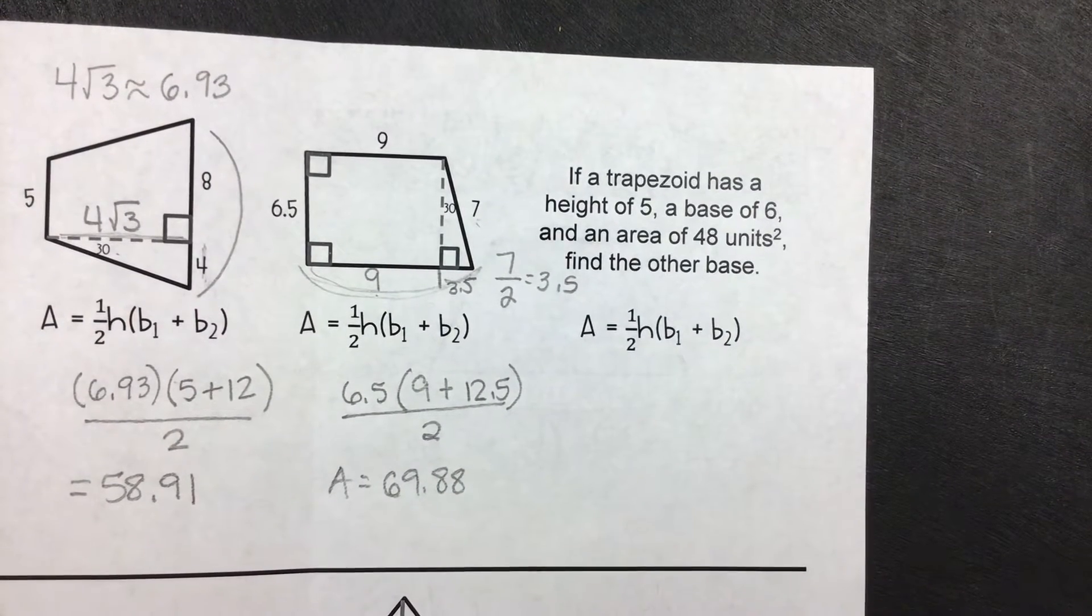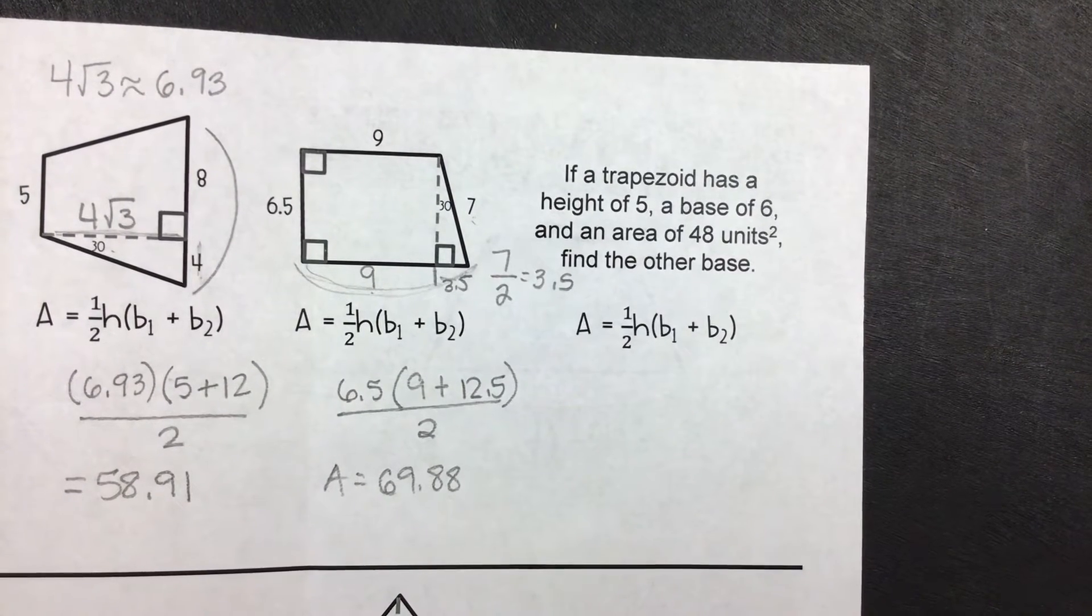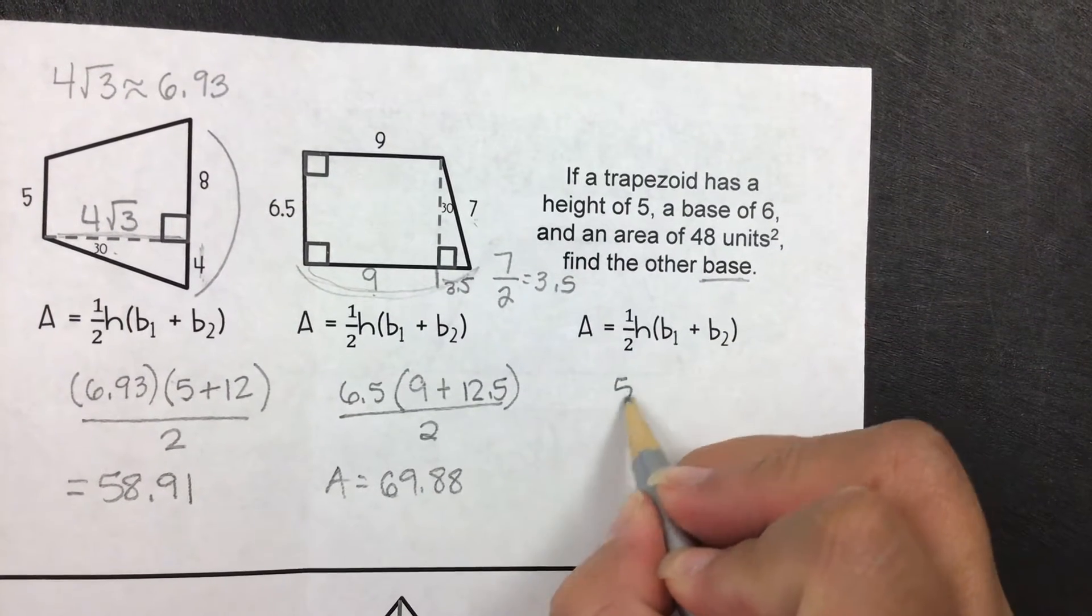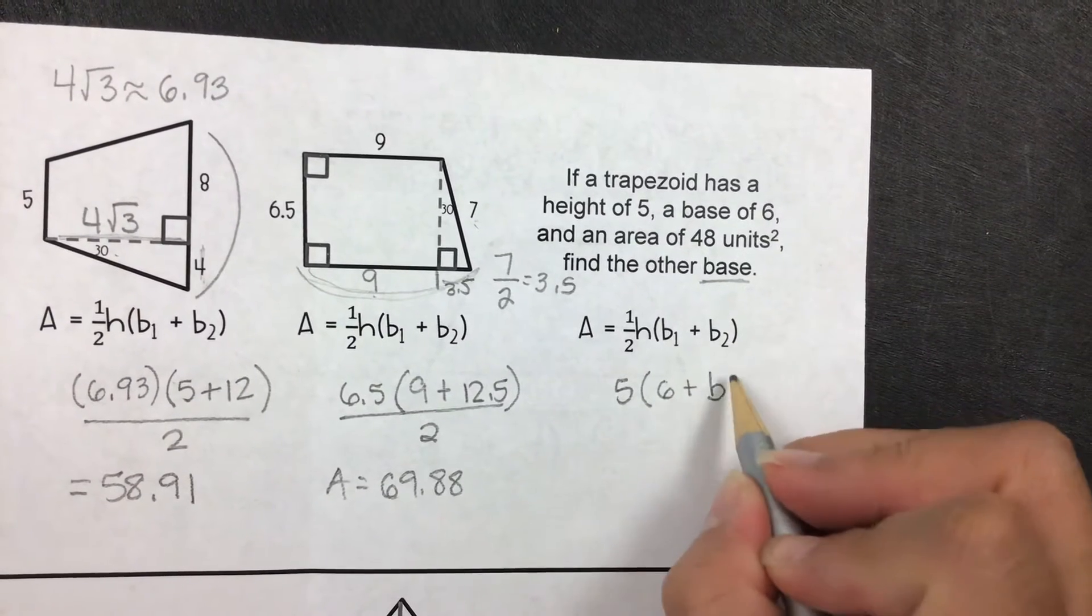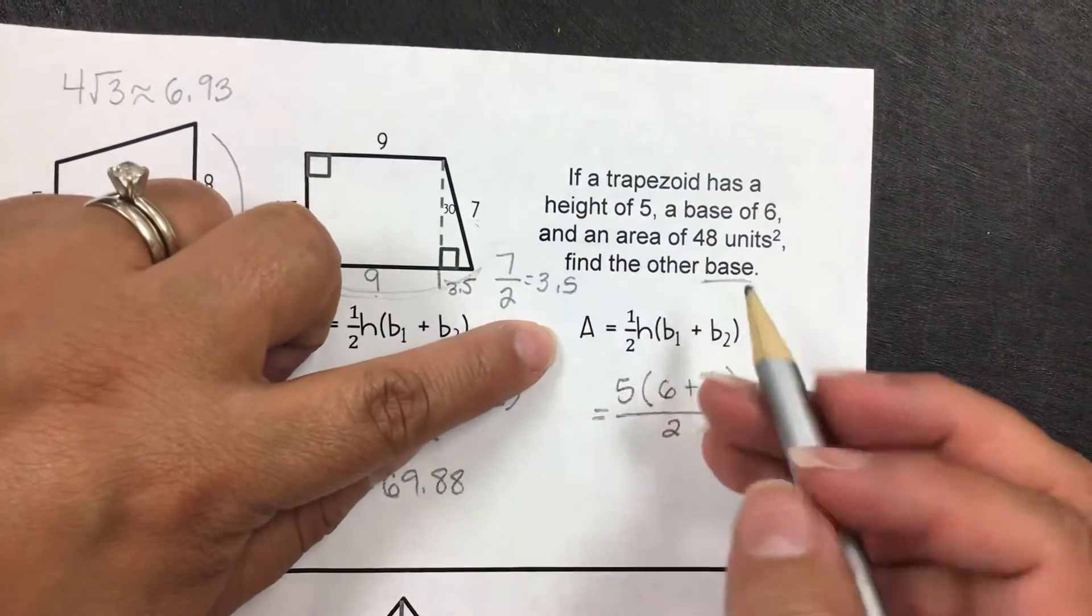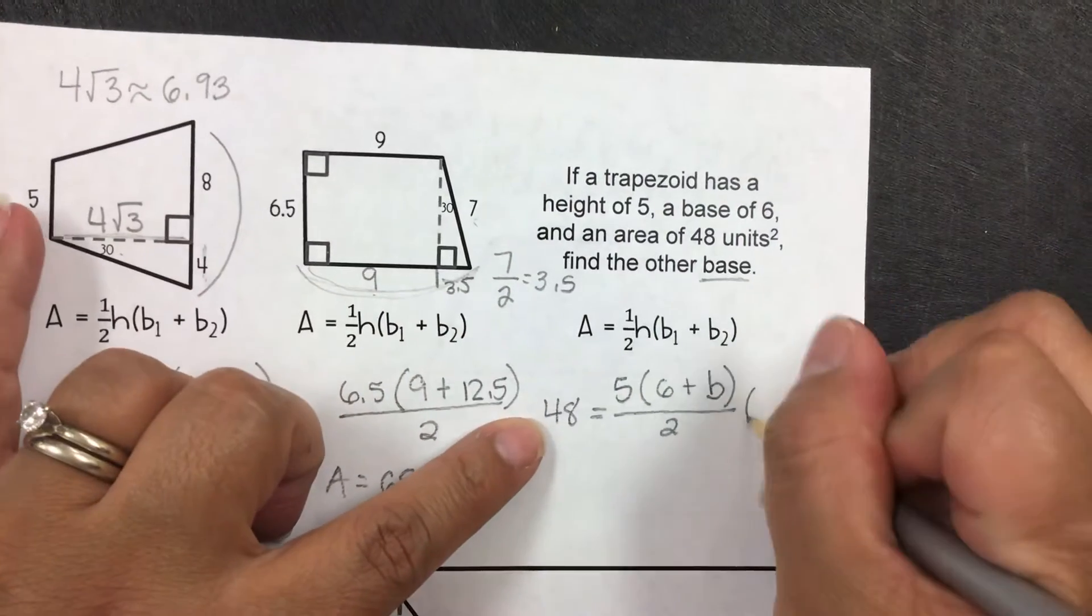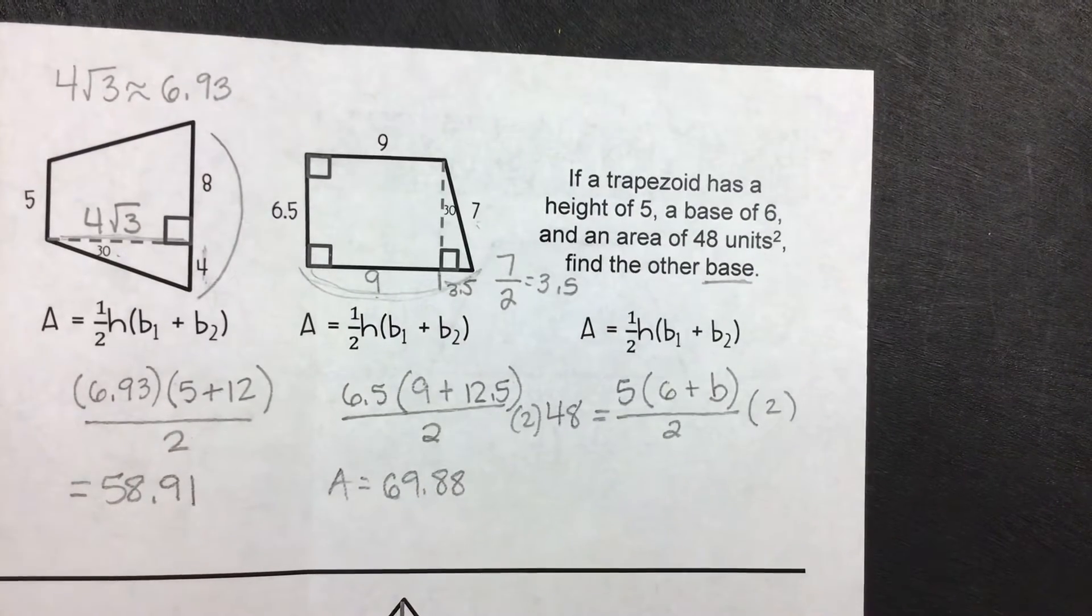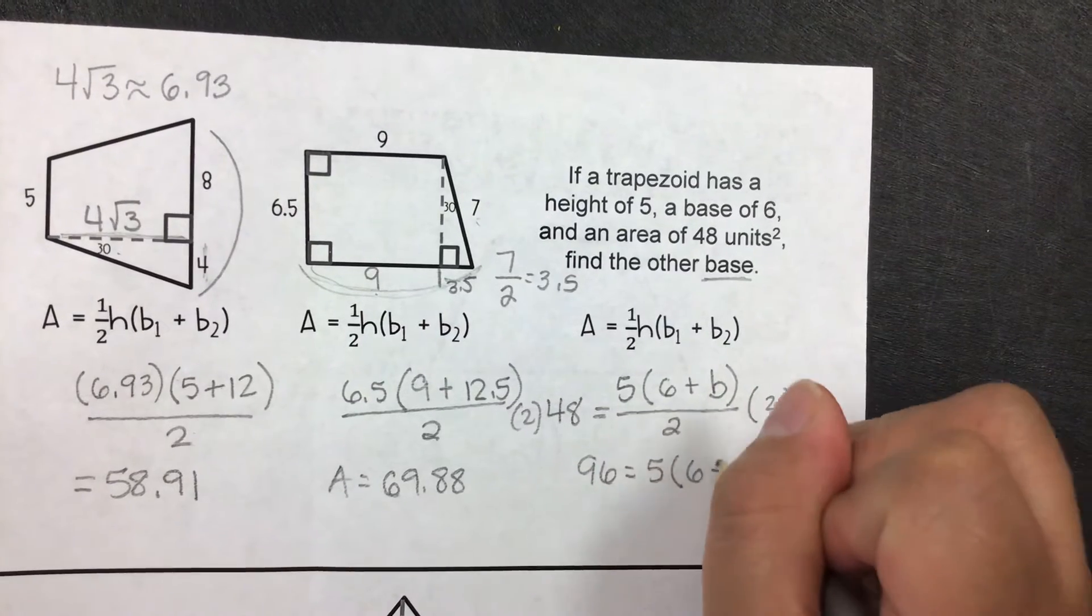If a trapezoid has a height of 5 and a base of 6 and an area of 48 units squared, find the other base. So we don't know one of the bases. I know the height is 5, I know one of the bases is 6, the other one I don't know, so we're going to leave it as a variable. And then divide it by 2 is equal to the area given. So all I did was substitute in the values. I've taught you to multiply by 2 to get rid of that division. So 48 times 2 is 96 is equal to 5 times 6 plus b.